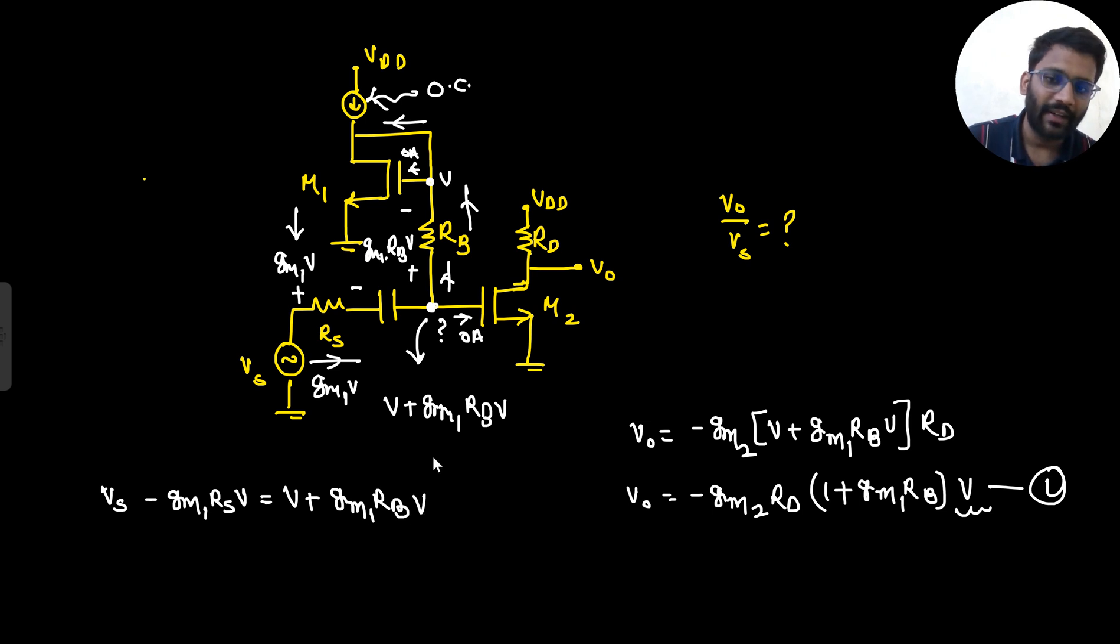Vs minus gm1 Rs V will be equals to V plus gm1 Rb into V. This potential we are finding. This potential we already know. V plus gm1 Rb into V, and from here if gm1 V current is flowing, that means it will give the drop of gm1 Rs into V. So basically your Vs is 1 plus gm1 Rs plus Rb into V.